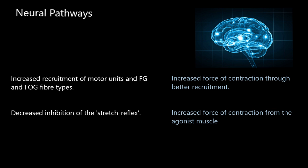Through strength training I will also recruit more fast-twitch muscle fibres — fast glycolytic and fast oxidative glycolytic. Remember, those are the muscle fibre types that are twice as thick as type 1 fibres and therefore produce higher levels of force, giving greater force production.